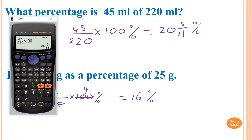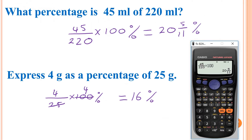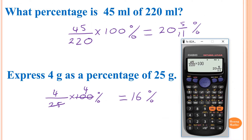Otherwise just use your calculator. All you need to do is 4 divided by 25 — same thing as 4 over 25 — and just times by 100, which gives 16 percent.